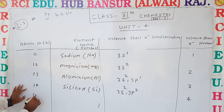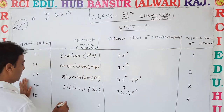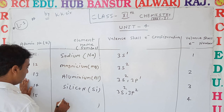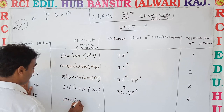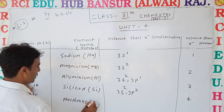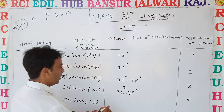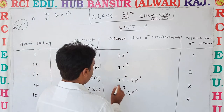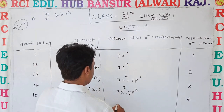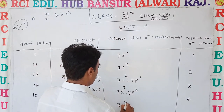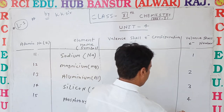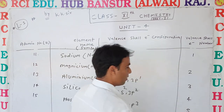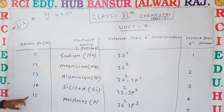Atomic number 15 is Phosphorus, symbol P. Its valence electron configuration is 3s2 3p3, so there are 5 valence electrons present.